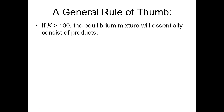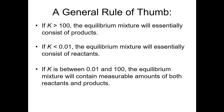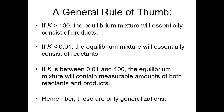Here are some basic rules of thumb for thinking about what's present in the equilibrium mixture based on certain values of K. If K is greater than 100, the equilibrium mixture essentially consists of products. If K is less than 0.01 (10⁻², the reciprocal of 100), the equilibrium mixture essentially consists of reactants. If K is between 0.01 and 100, we expect appreciable amounts of both reactants and products. But remember, these are only generalizations.